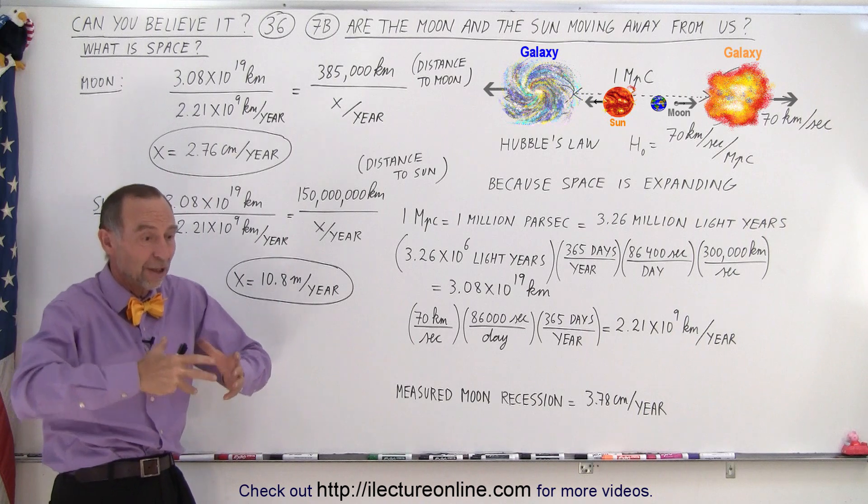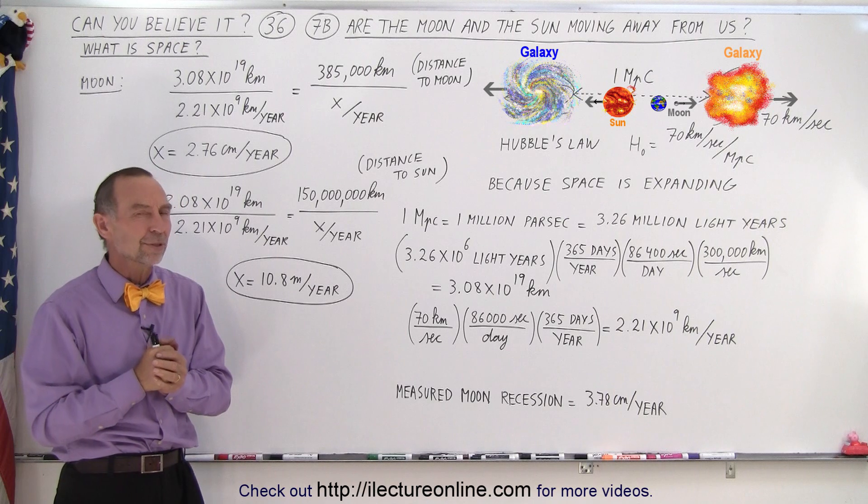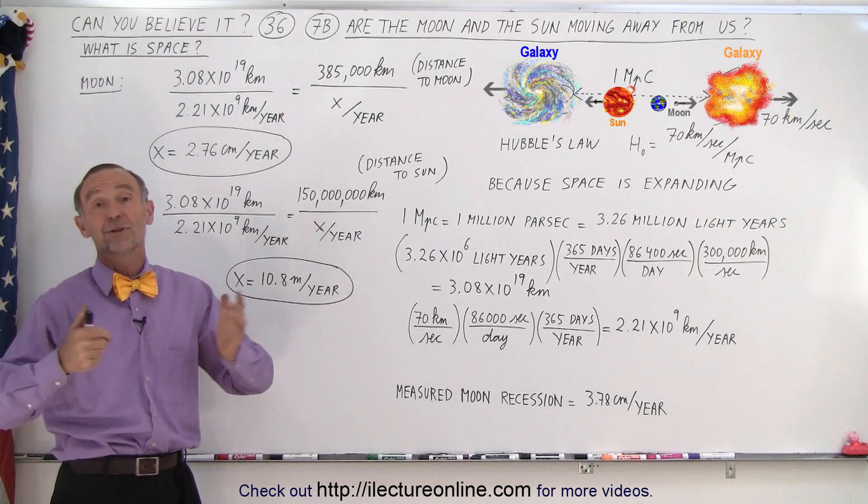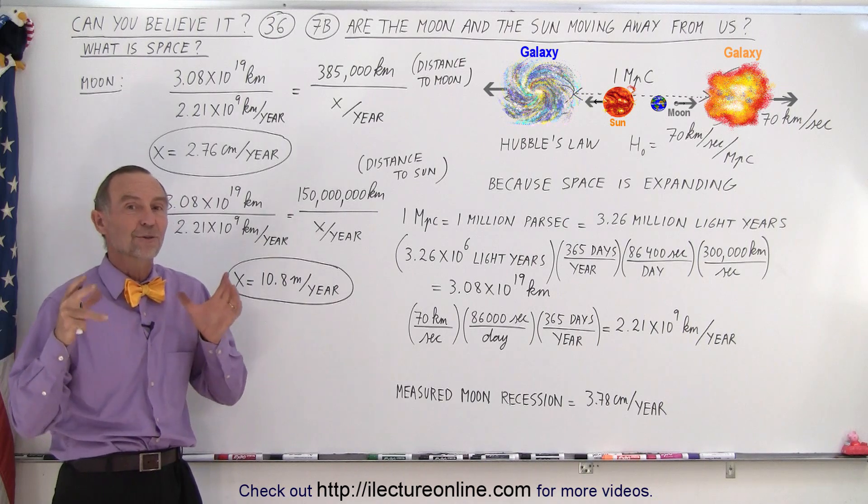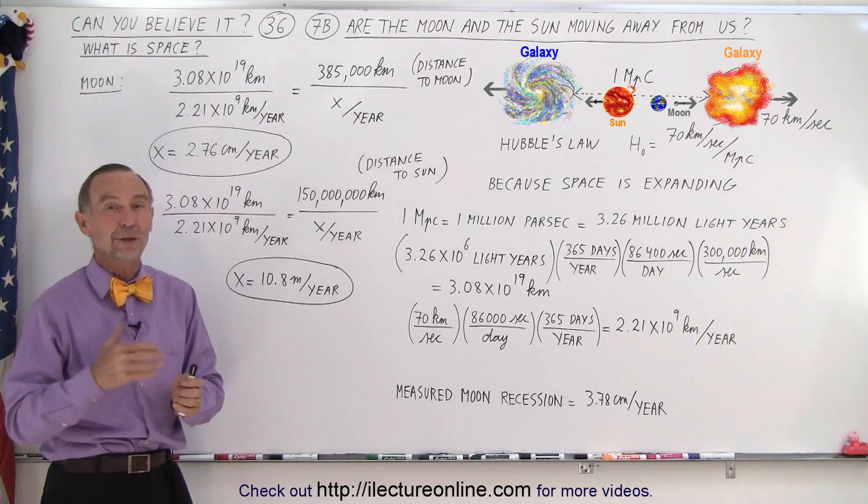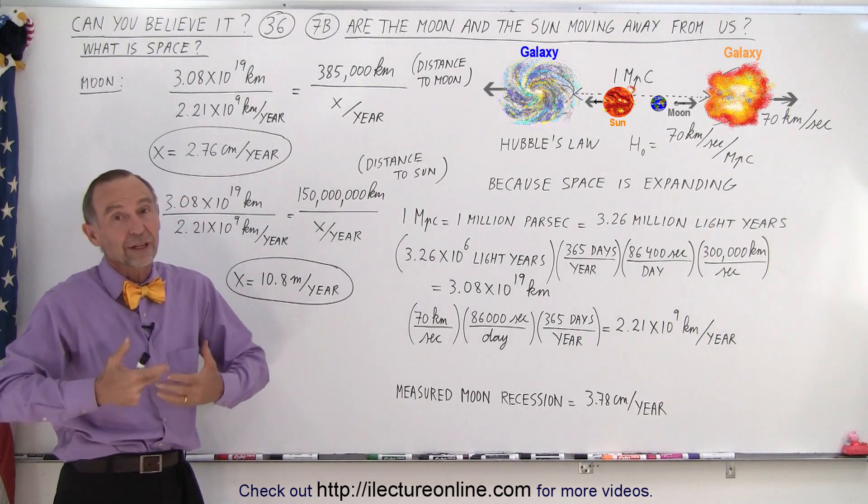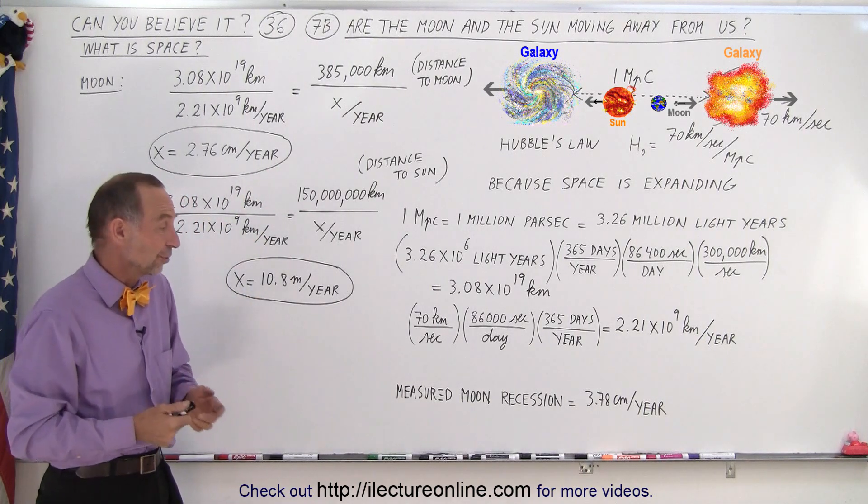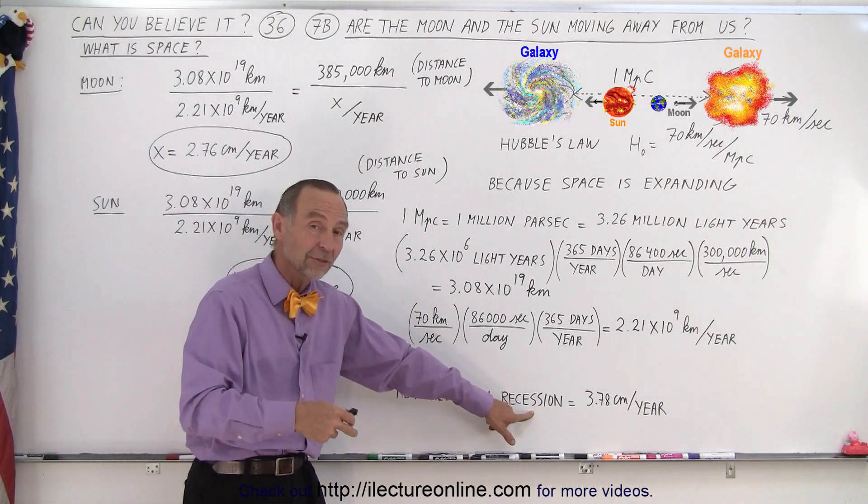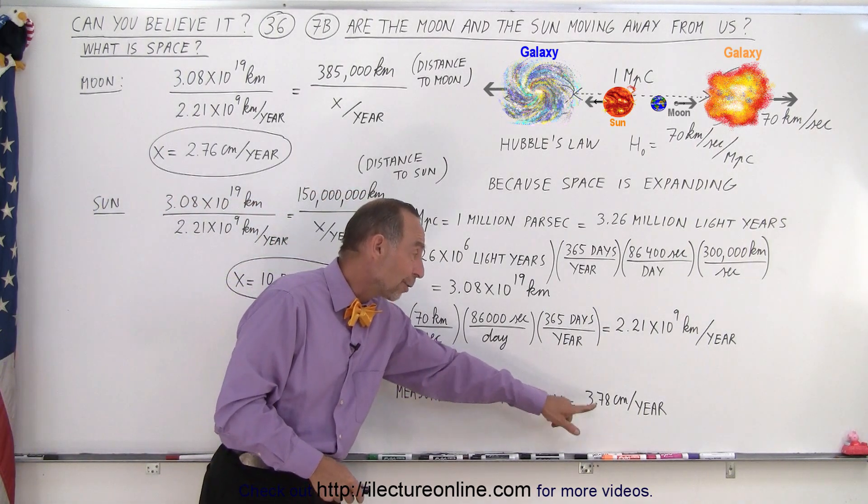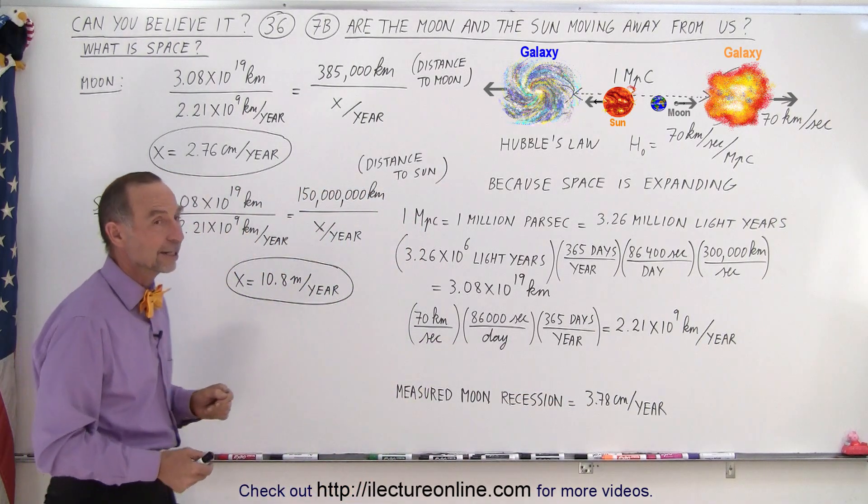So based upon the expansion of space, the moon should move away from us at 2.76 centimeters per year. Now is the moon actually doing that? Well it turns out that back during the Apollo missions they actually put reflectors on the surface of the moon, and we can send laser beams to those reflectors and we've been trying to figure out whether or not the moon is moving away from us. And it turns out that we actually measured the moon receding from us, the recessional velocity, at 3.78 centimeters per year, which is in the ballpark of the number that we calculated here.